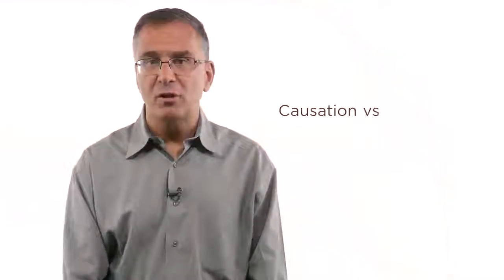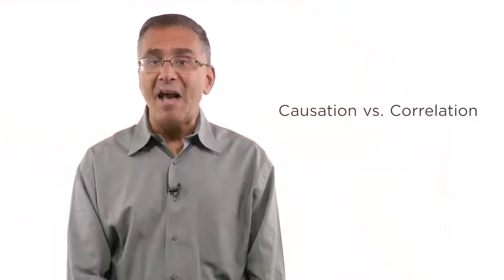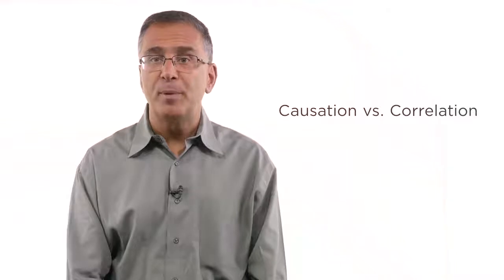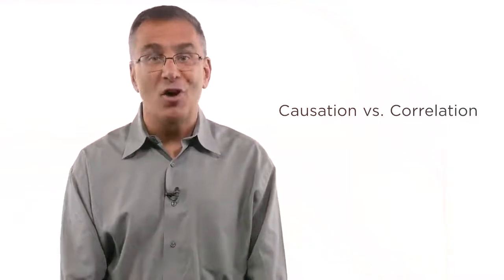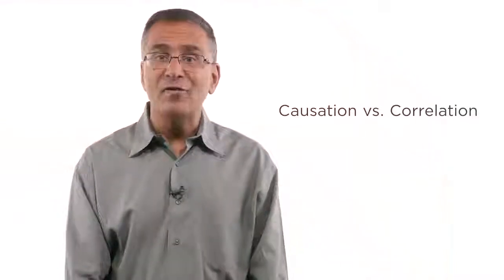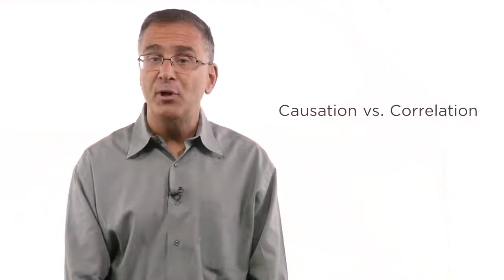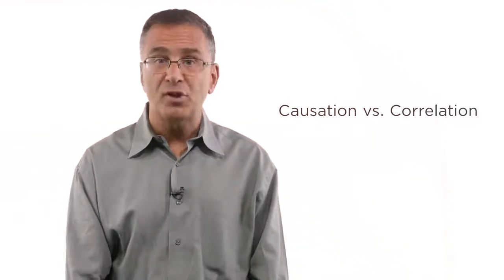So how can empirical economics help us sort out causation from correlation? How can we tell if more government benefits cause people to work less, or if doctors in ancient Russia cause cholera? The next video walks us through the steps used by empirical economists to address problems such as this.